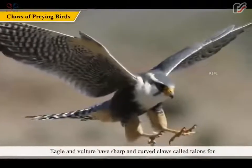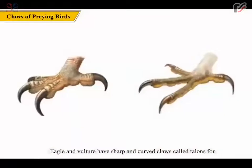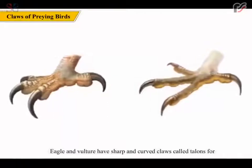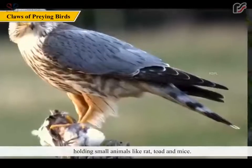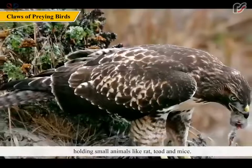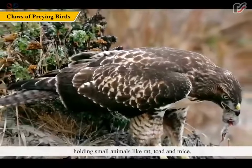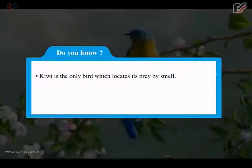Eagle and vulture have sharp and curved claws called talons for holding small animals like rat, toad and mice. Do you know? Kiwi is the only bird which locates its prey by smell.